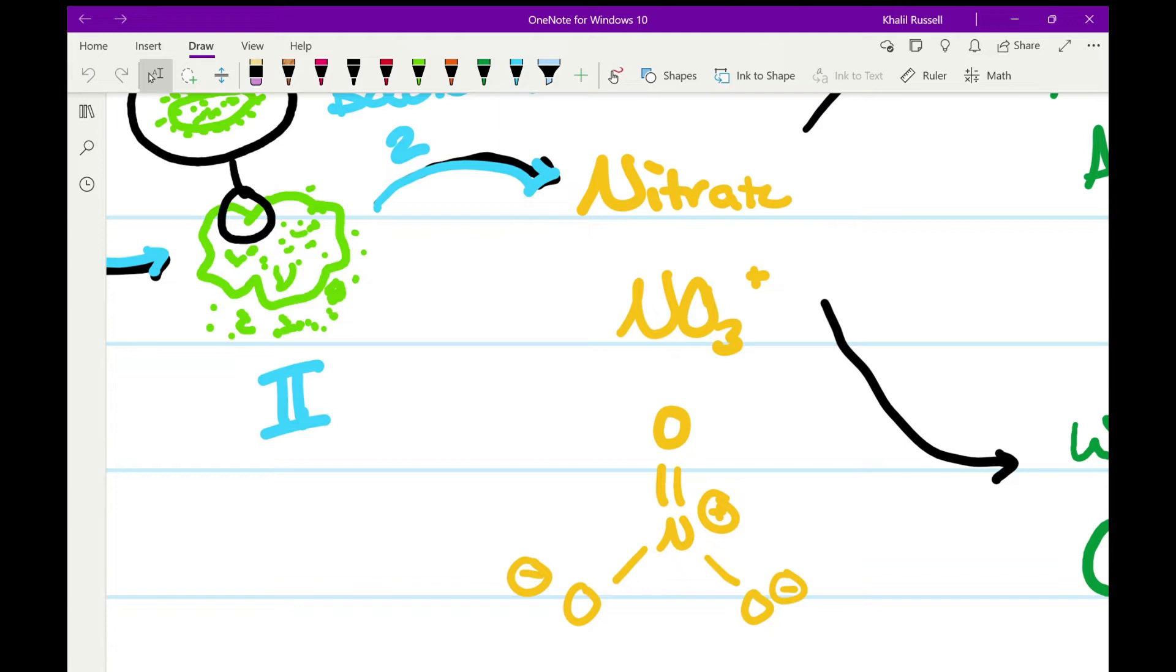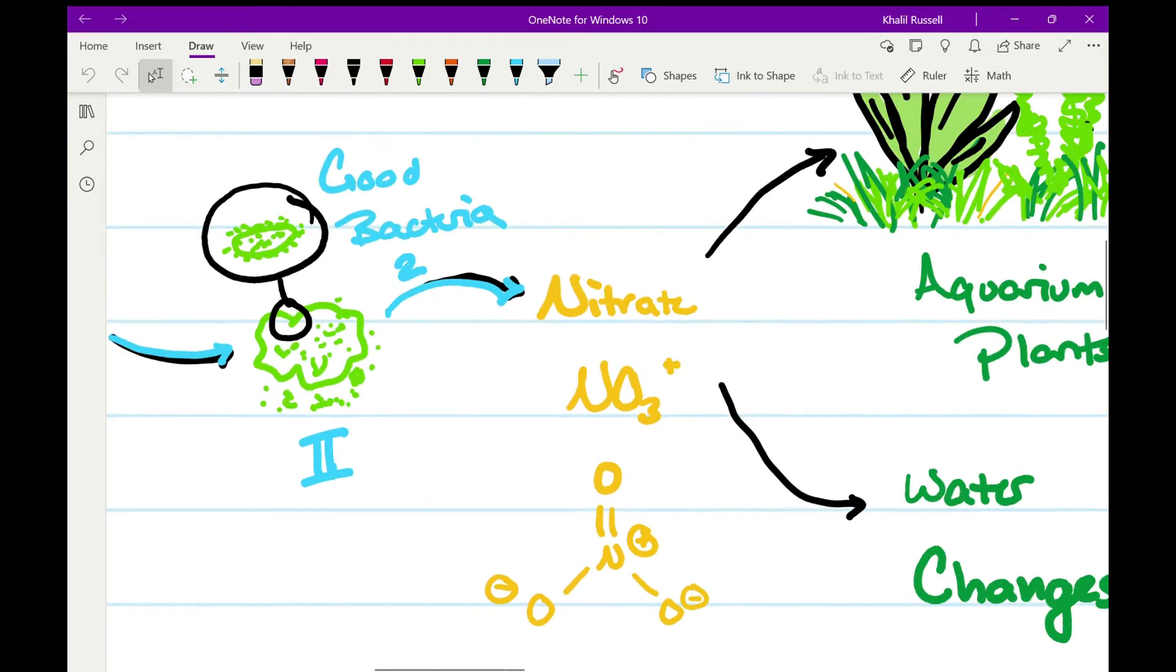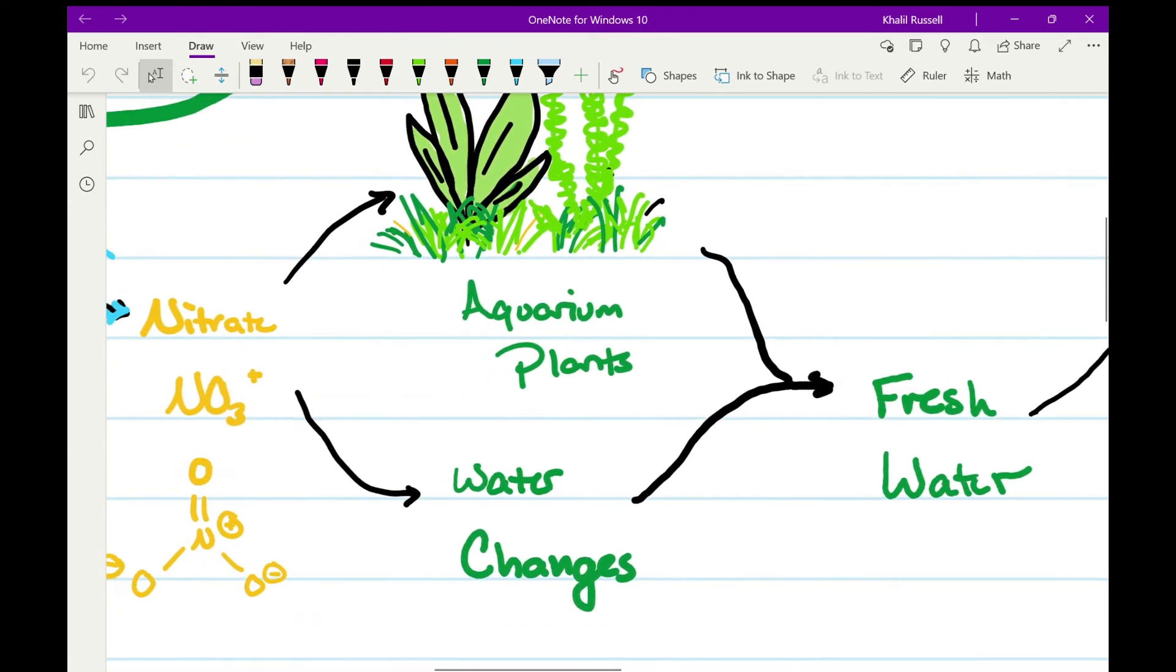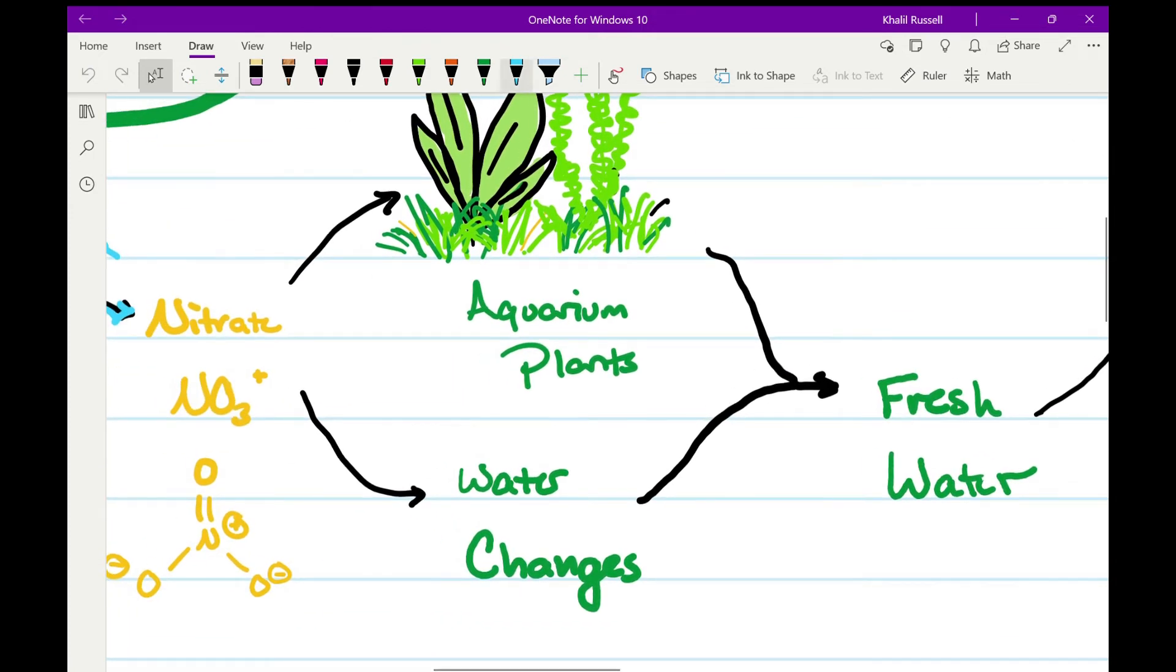Nitrates have a chemical formula of NO3 minus. It's one nitrogen and three oxygen. So what happens to your nitrates now that you have them in your aquarium? Well, a couple of different things can happen. One, you can have aquarium plants and they can take up those nitrates and use that nitrogen as nutrients. Or you can do water changes and remove those nitrates from the aquarium.